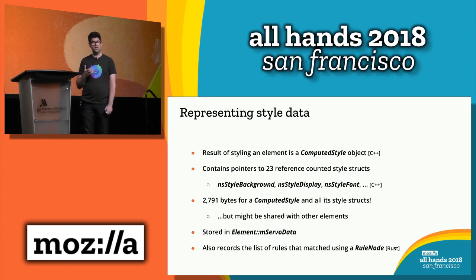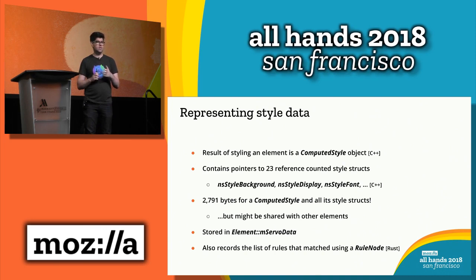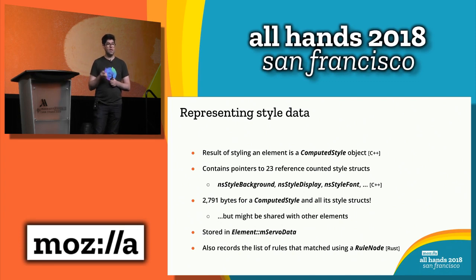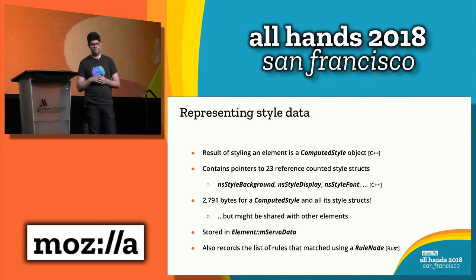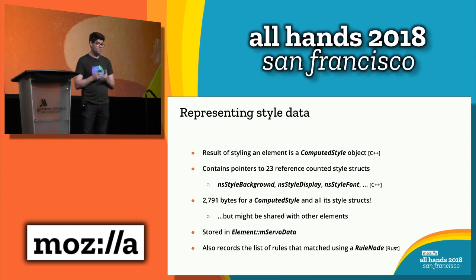The computed style is stored in a computed style object — a C++ object recently called NSStyleContext. It has pointers to different style structs; each style struct is a collection of related properties grouped together. For example, NSStyleBackground has background color, background image, and background position. NSStyleDisplay has display, mozbinding, overflow X, overflow Y. NSStyleFont has font size and font family. We've got 23 of these structs, totaling almost three kilobytes of data per element, so we try to avoid having a unique copy for every single element in the DOM.